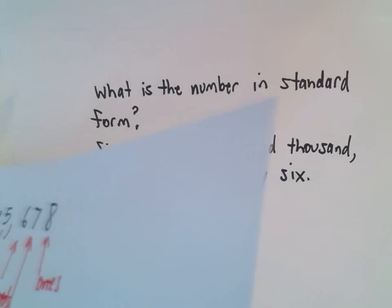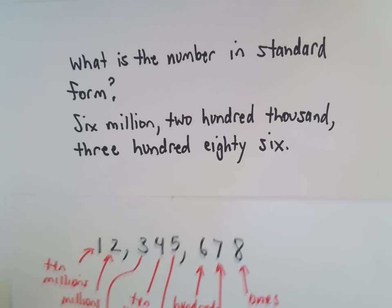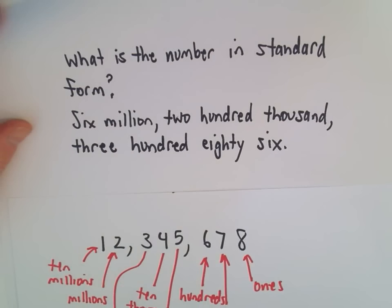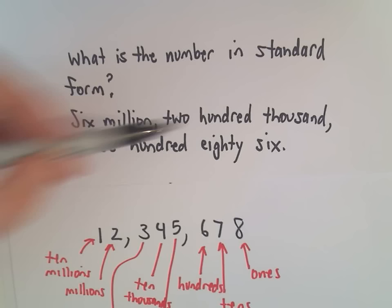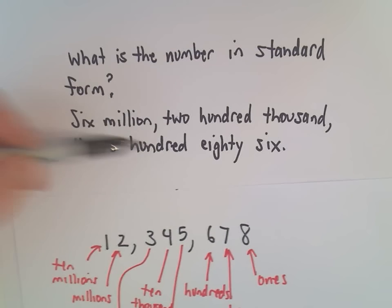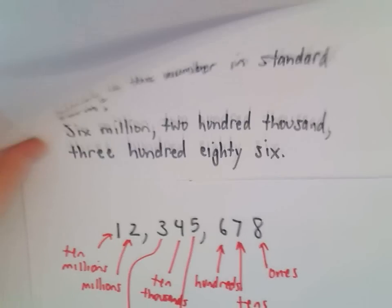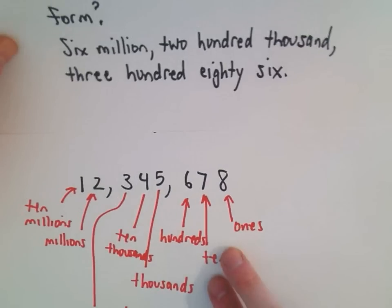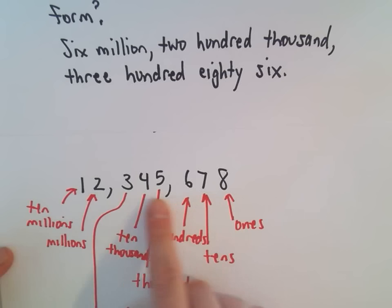So one more example here. And this is why I went out to millions, because I knew my next example did go out to millions. So it says, what's the following number in standard form? 6,200,386. So again, kind of the same thing. I'm going to think, well, it says 6 million. So I'm going to find the millions place. Well, there's the millions place. So we have 6 million. So I'm just going to put a 6 there.